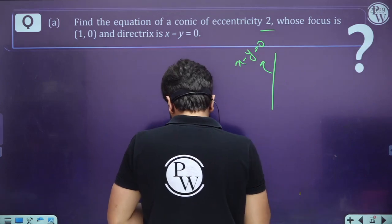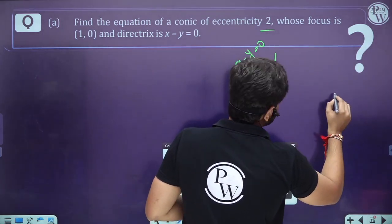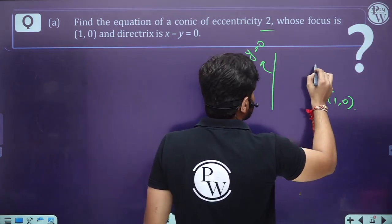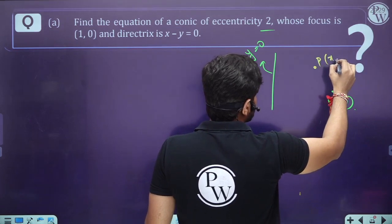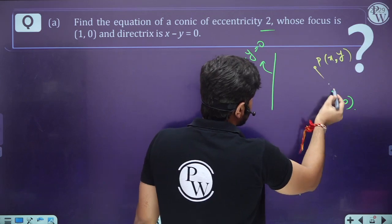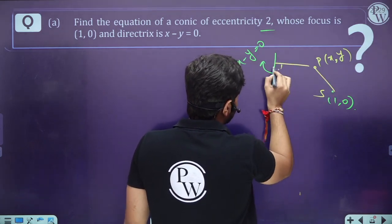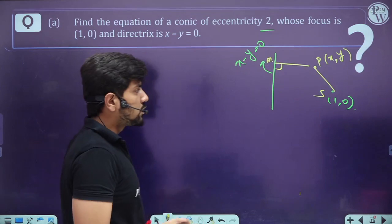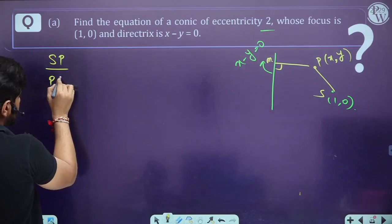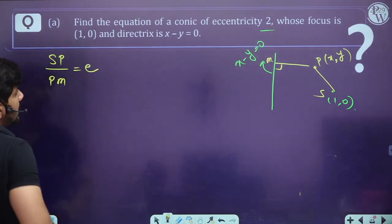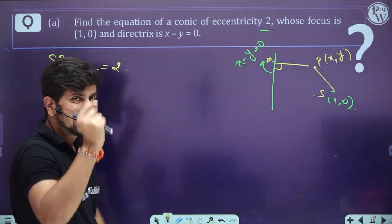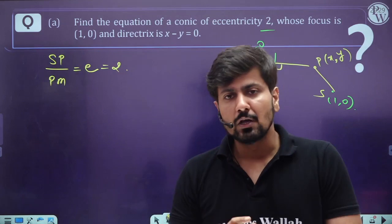Applying SP = 2·PM: √[(x−1)² + y²] = 2·|x−y|/√2. Squaring both sides: (x−1)² + y² on the left, and 4·(x−y)²/2 = 2(x−y)² on the right.